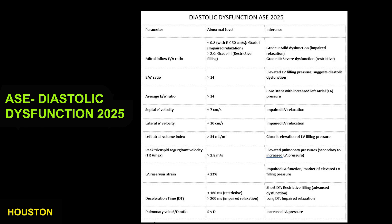Mitral inflow less than 0.8 is grade 1 diastolic dysfunction or impaired relaxation. Greater than 2 is grade 3 or restrictive filling.